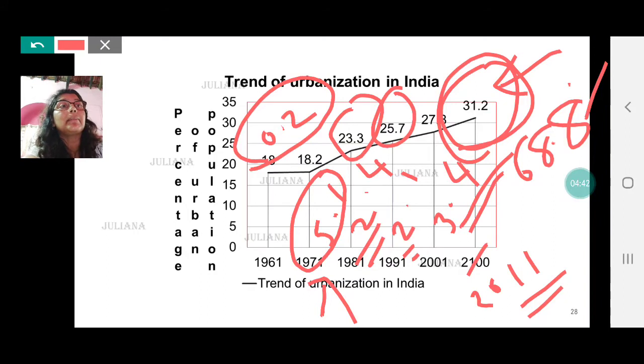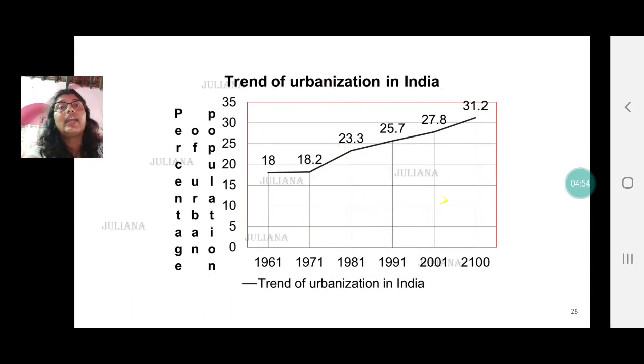That means that majority of the people in India are residing in rural areas and only 31.2 percent of our population is residing in urban areas. I hope I am clear.